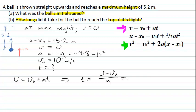And that I can put values in for. I know that at the top of the flight the velocity is zero. I know now what my initial velocity is. It was 10 meters per second. And I know my acceleration is minus 9.8 meters per second squared. And when I do that calculation,